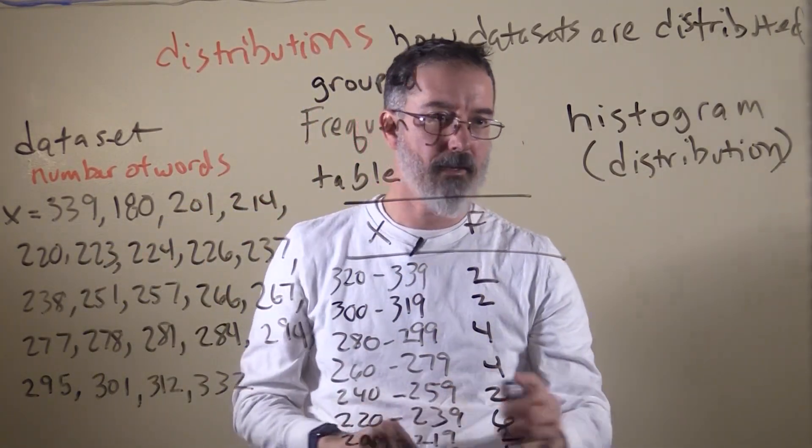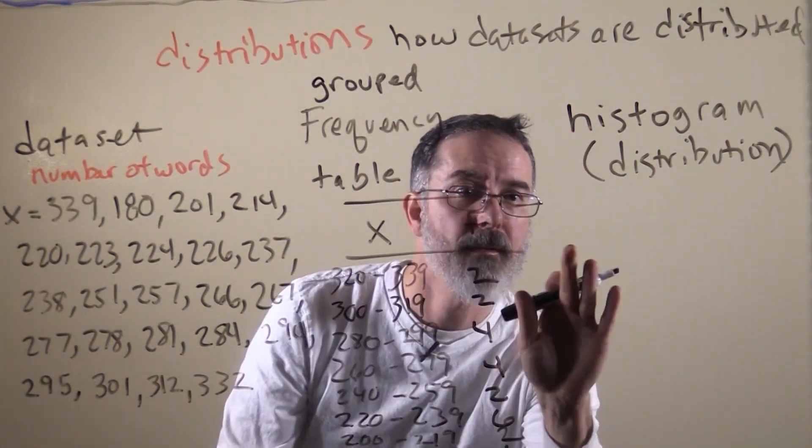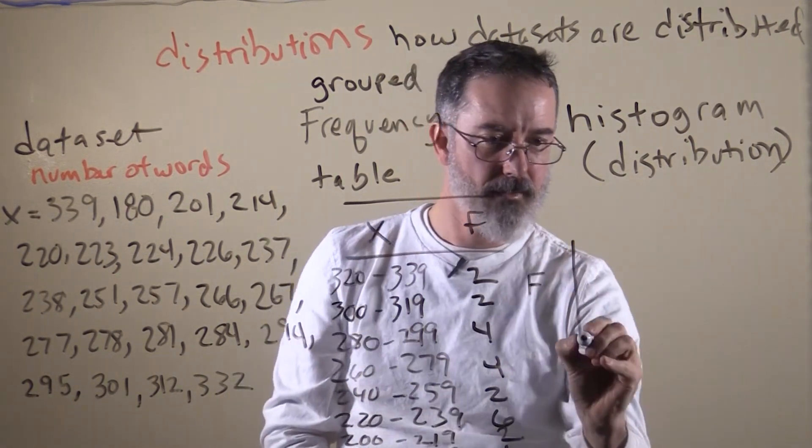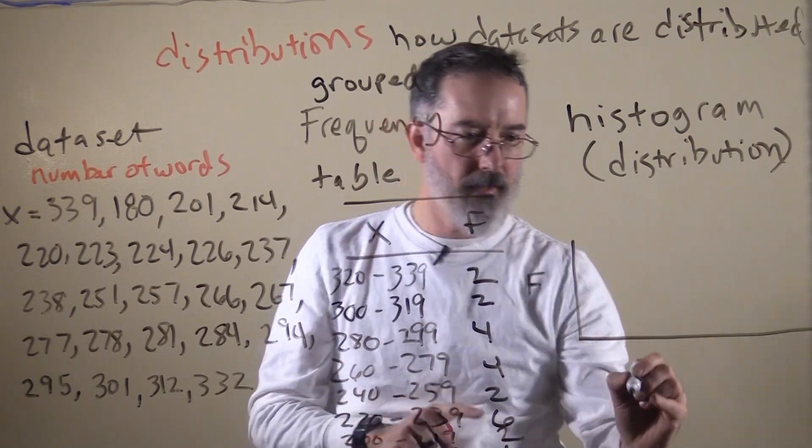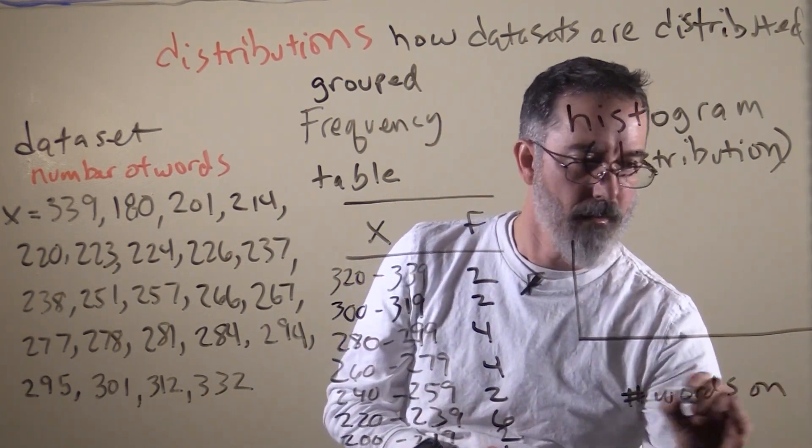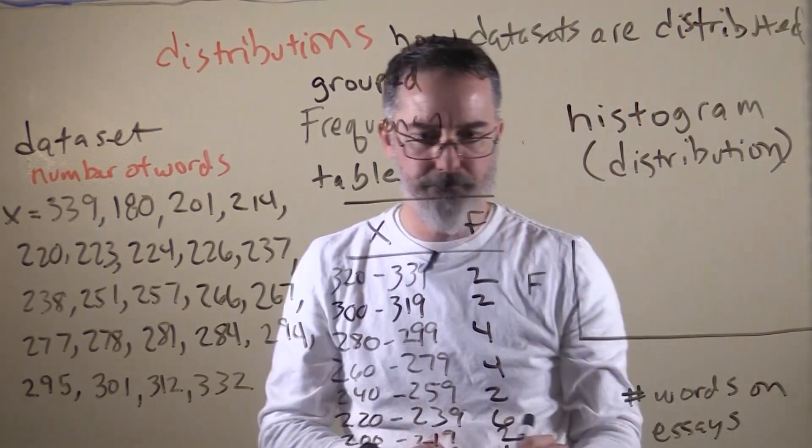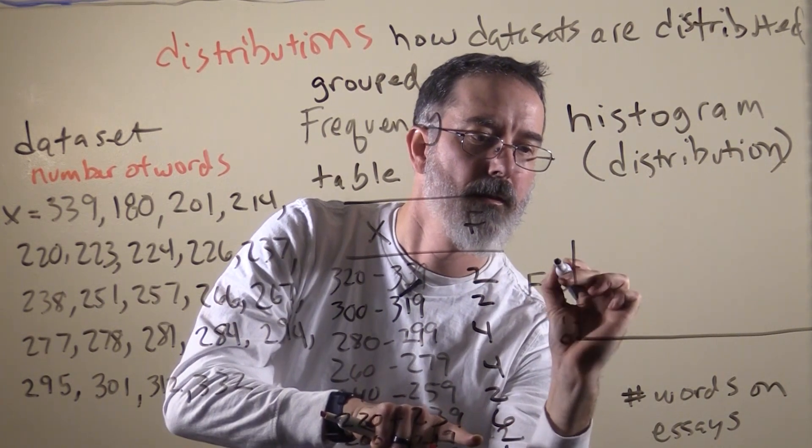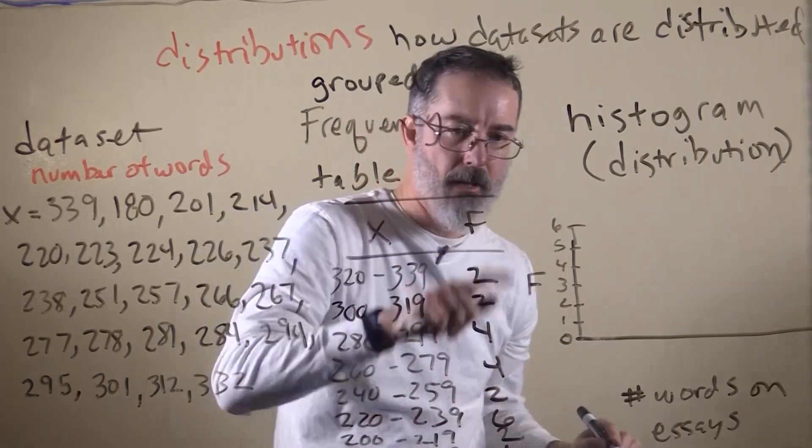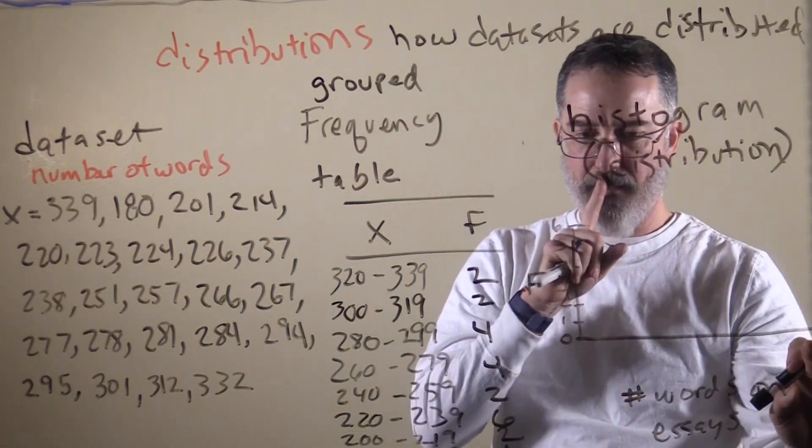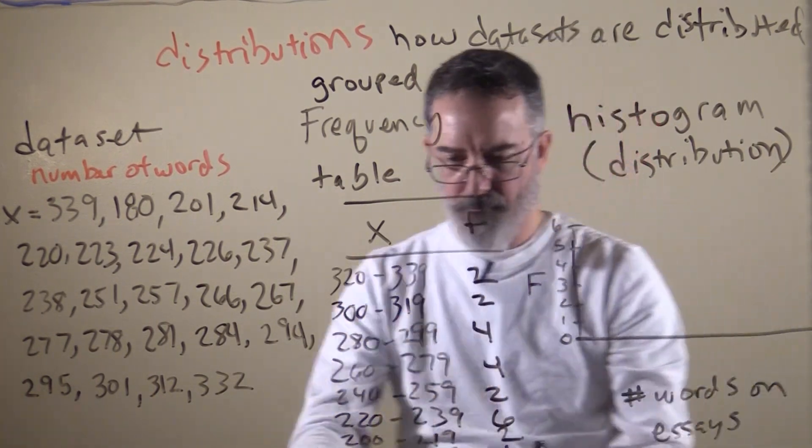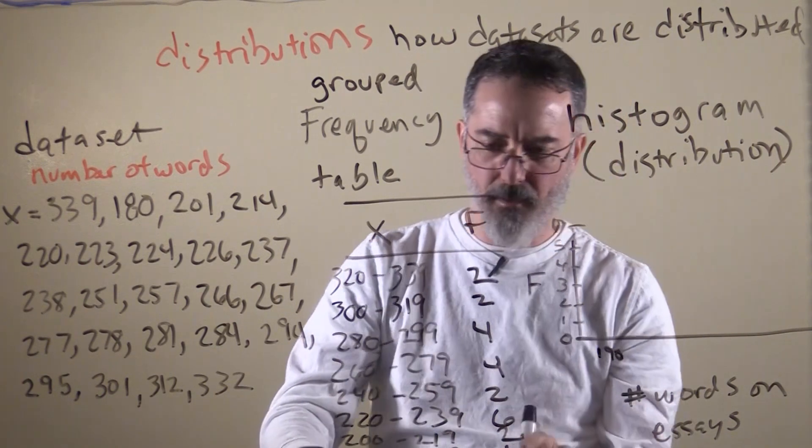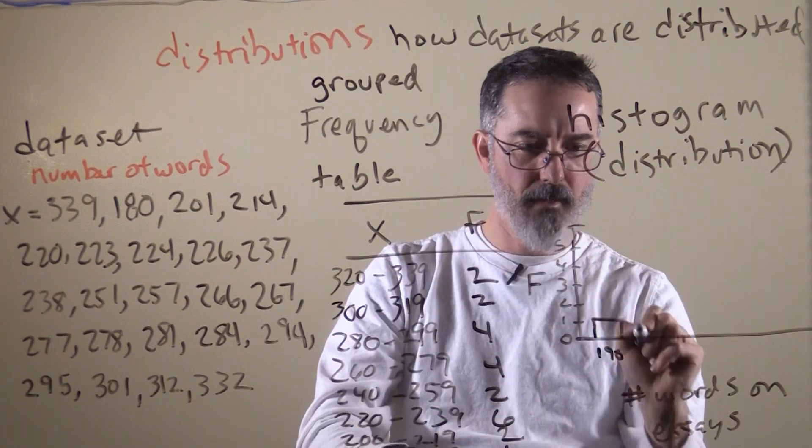But we can also do a histogram with this grouped data. We are going to need our vertical axis for our frequencies, and our horizontal axis. These are the number of words on the essays. The highest frequency is 6, 0, 1, 2, 3, 4, 5, 6. We will start with the lowest number. So, we have to decide what numbers to put down here. To do that, we want to have it be as intuitive for the reader as possible. So, what I am going to do is, in between 180 and 200, right in the middle there is 190. So, I am going to put that right there. And what I am going to do is, I am going to center this bar on top of that, 190.